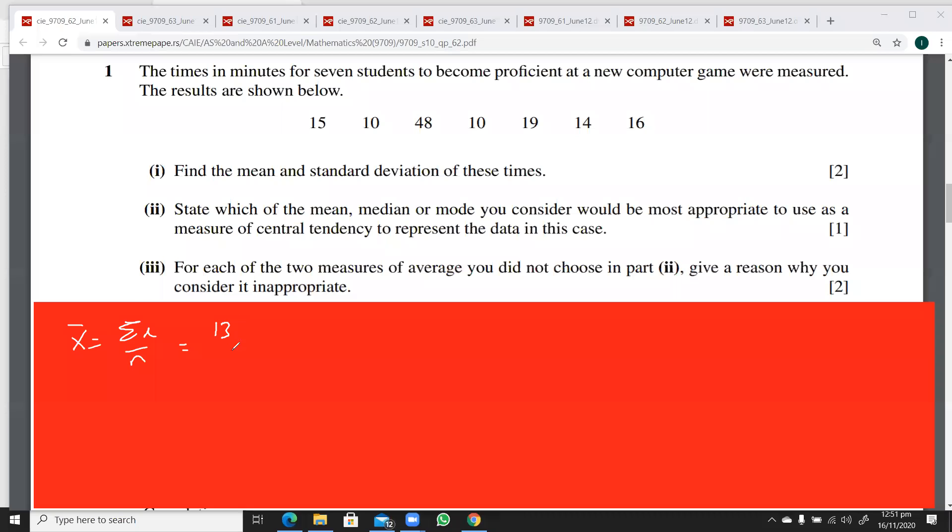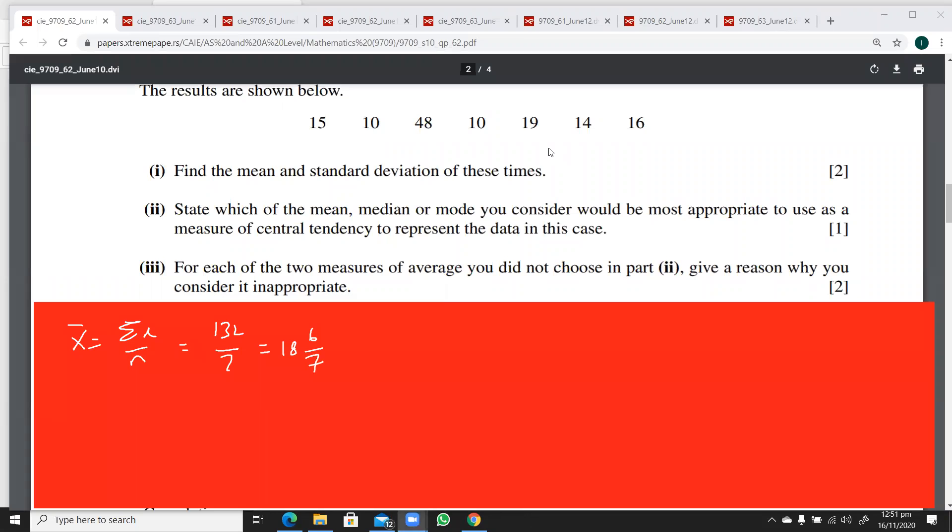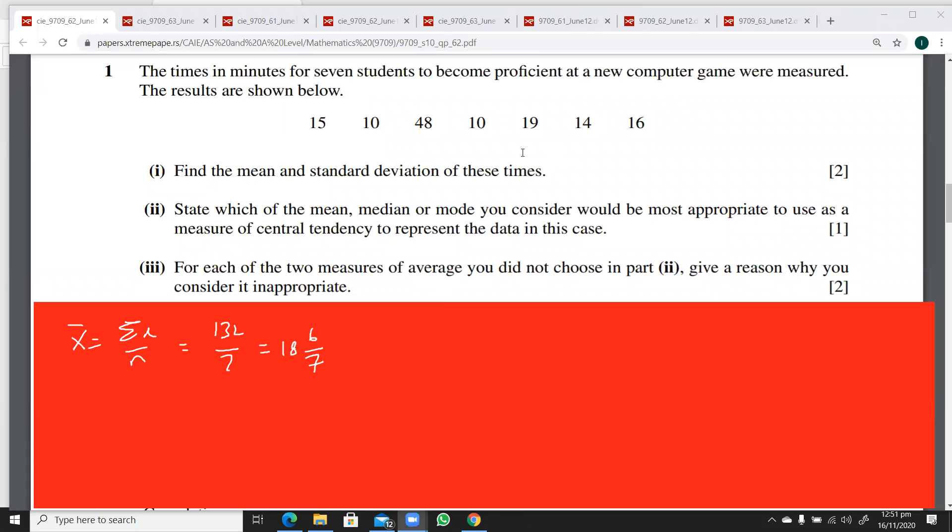Let's do that quickly. This is 25 and 65, 73, 83, 102, 116, and 132. There are seven students, so this is 132 over 7. Please keep a check on these calculations.